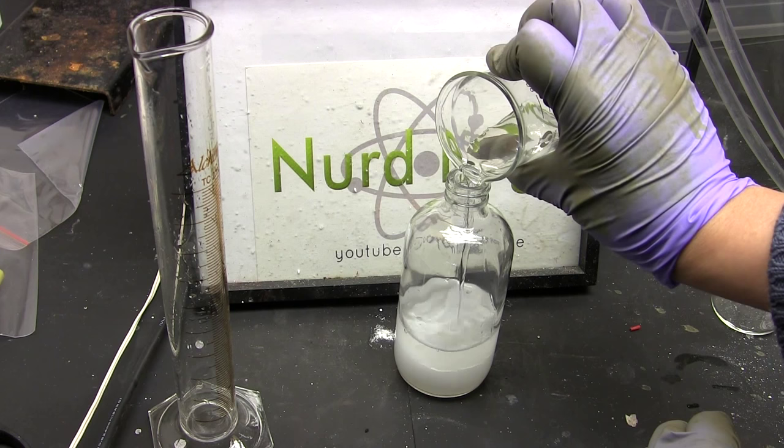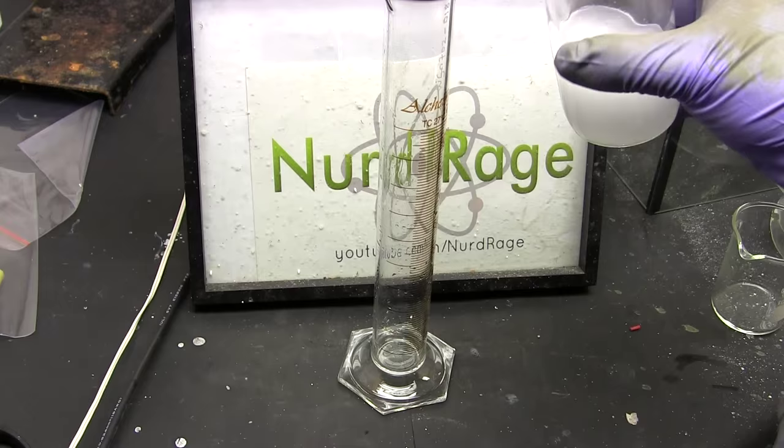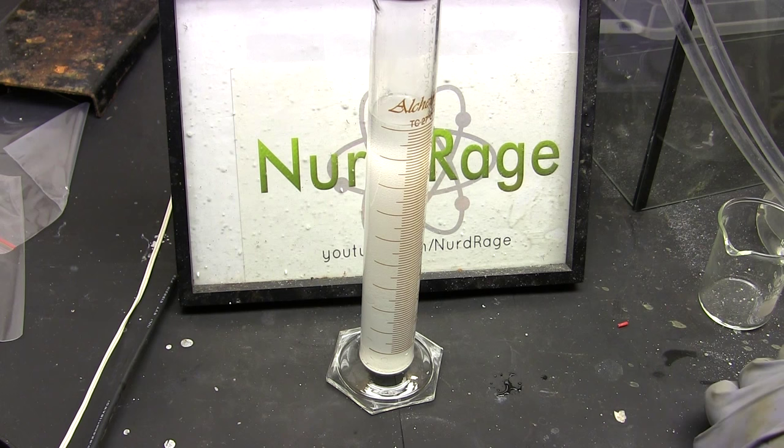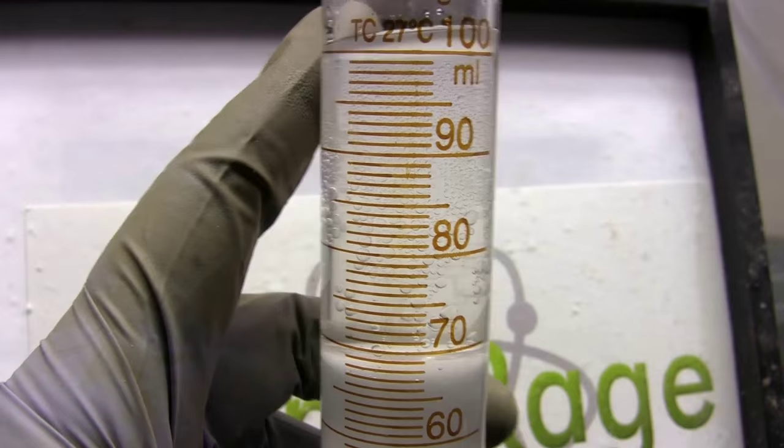Here I'm mixing 50mL of the lacquer thinner with 50mL of water. Methanol, methyl ethyl ketone and acetone if it is present are all very soluble in water but toluene is almost insoluble. Therefore by mixing the lacquer thinner with water I should see a floating layer of nonpolar solvent consisting mostly of toluene and some of the other components partitioned into it.